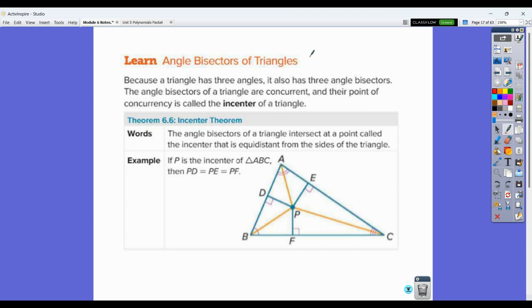So the angle bisectors of a triangle go to the point of concurrency here. We have that point of concurrency, and it is called the incenter. If you have the three angle bisectors, so you can see those in orange here, they intersect at the point of concurrency. P right there is the incenter. What we know about the incenter is that it's equidistant from the sides. So if you draw the distance to the side and the distance to a side and distance to a side, all of those are equal to each other.